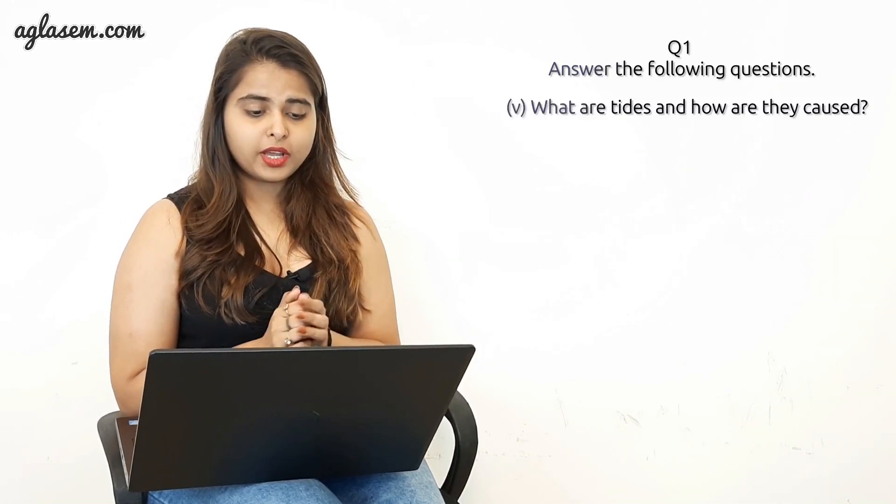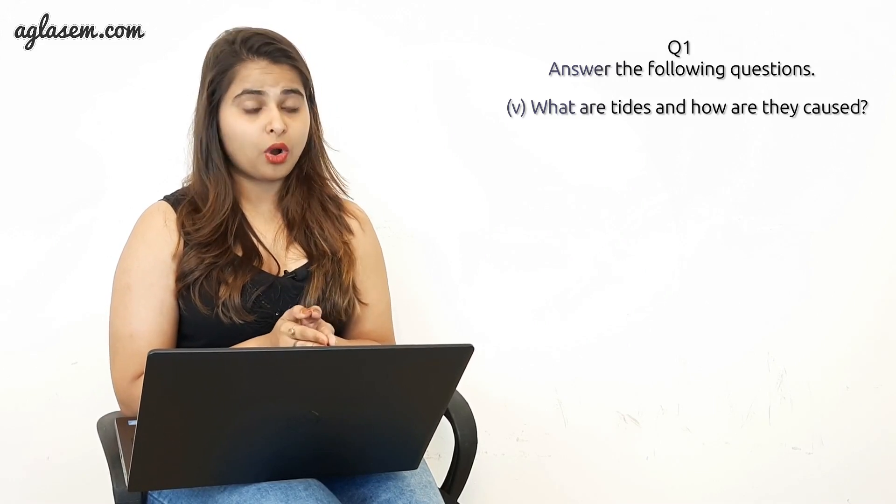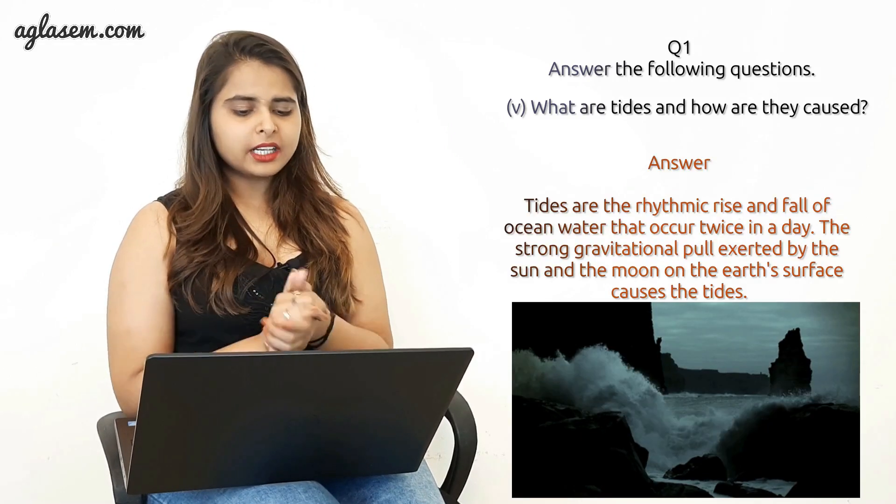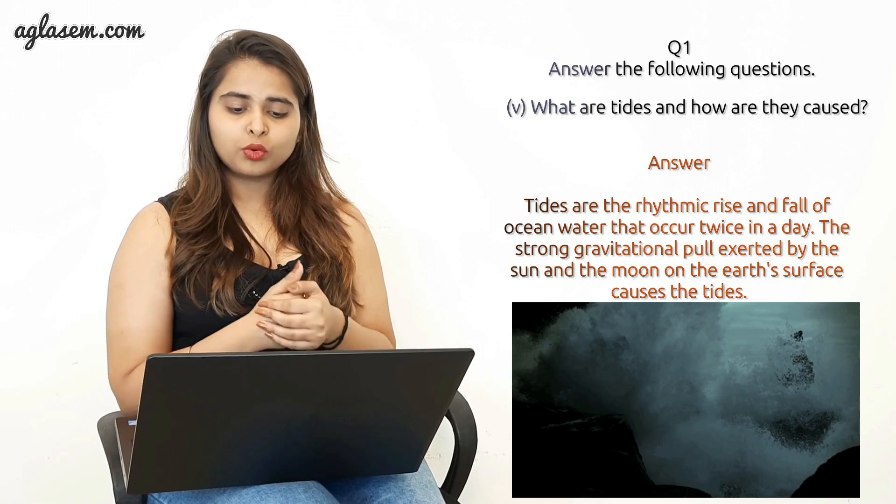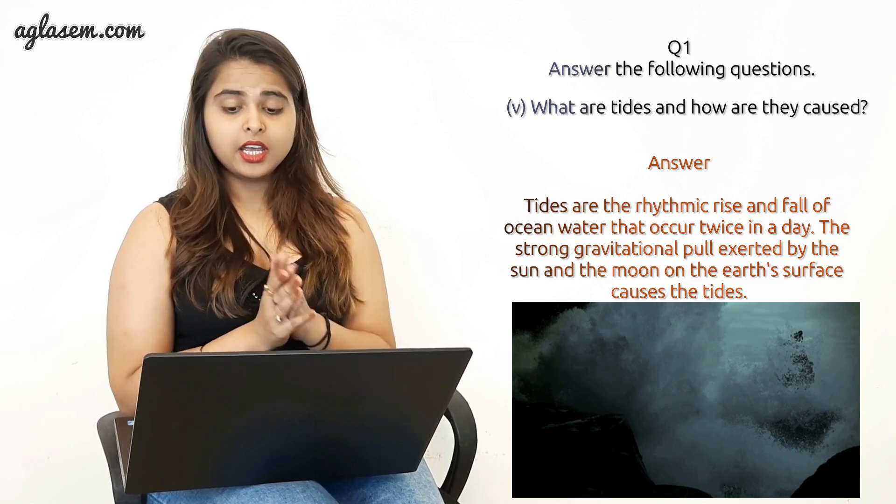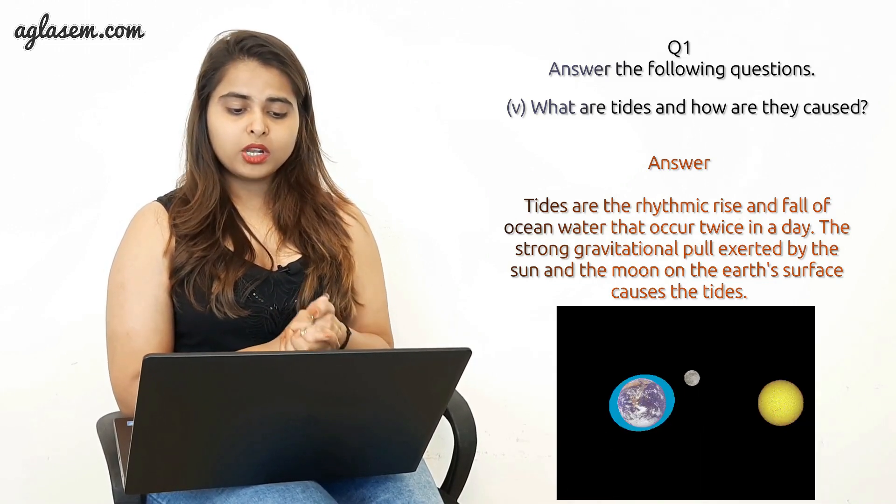Now the fifth one is what are tides and how are they caused? Answer: Tides are the rhythmic rise and fall of the ocean that occurs twice in a day. The strong gravitational pull exerted by the sun and moon on the earth's surface causes the tides.